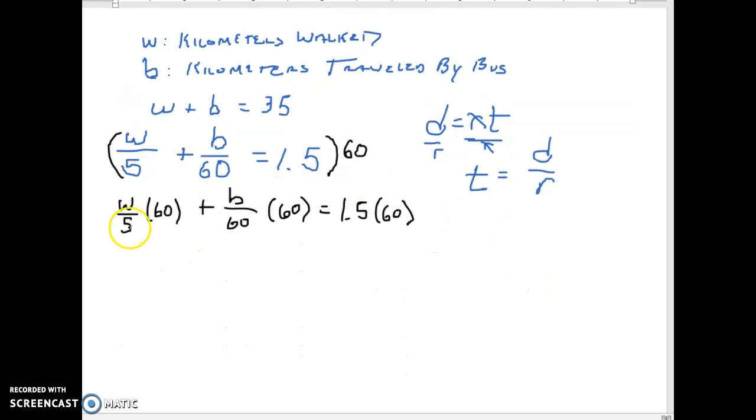...is that that gives us the equation: 60 divided by 5 is going to be 12, so we'll get 12W, plus 60 divided by 60 is 1, so we'll just get 1B. And 1.5 times 60 is 90. So these are now our two equations.